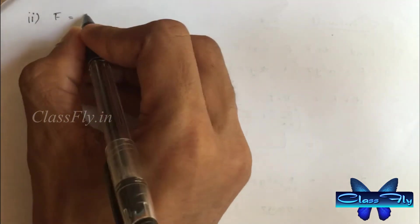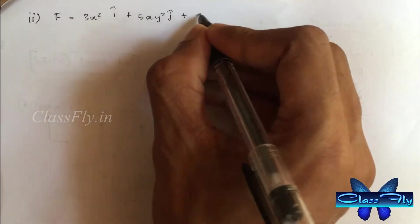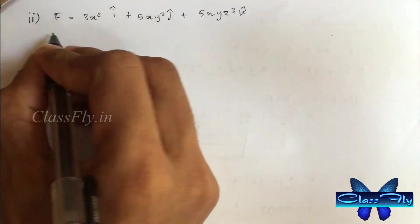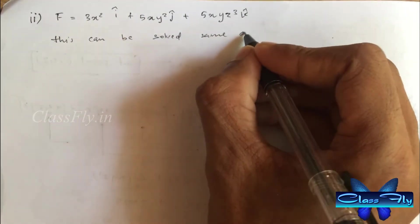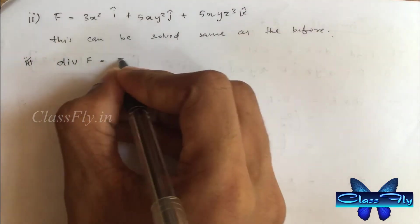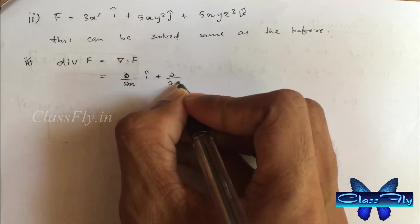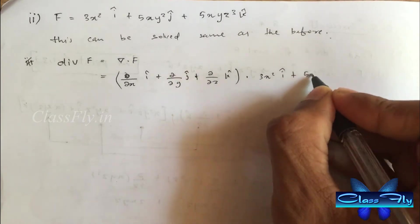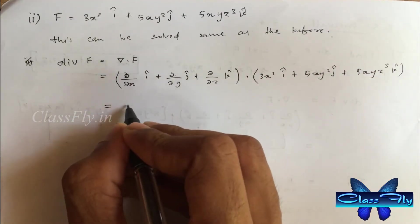Second problem: F equals 3x square i cap plus 5xy square j cap plus 5xyz cube k cap. This can be solved same as the before one. Divergence F equals del dot F which is equal to d by dx i cap plus d by dy j cap plus d by dz k cap dot 3x square i cap plus 5xy square j cap plus 5xyz cube k cap.